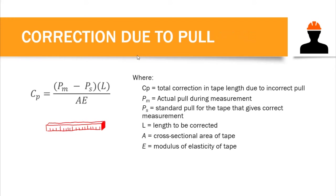We also have the correction due to pull. If you pull the tape more than its required pull, there would be an increase in the length — the tape would stretch — and this results in error. But if you pull a tape less than its standard pull, there would be sagging, meaning a shortening of the tape. It is very important that you pull the tape at its standard pull as much as possible, keeping the tape perfectly horizontal with no inclinations and no sagging.